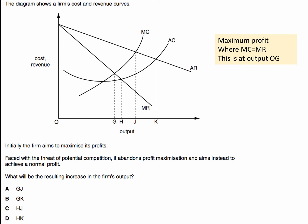But faced with the threat of competition, they decide to abandon profit maximization and instead just look to make a normal profit. So where do we make normal profit? That is where average cost equals average revenue, which is output JK.